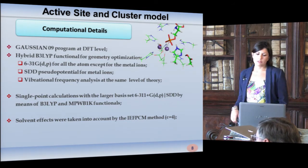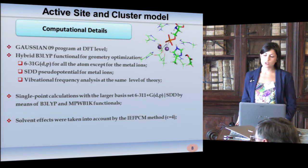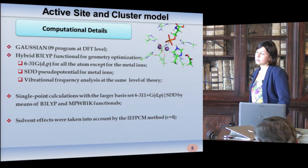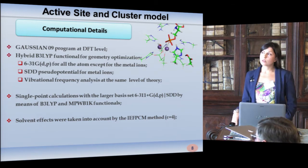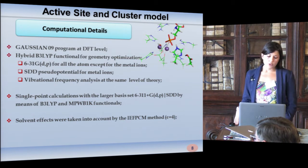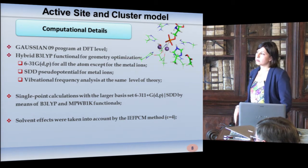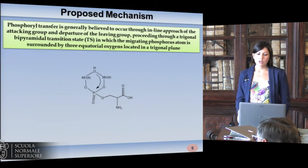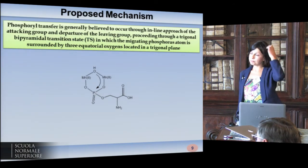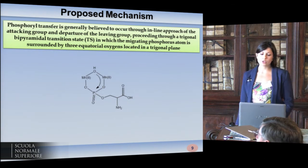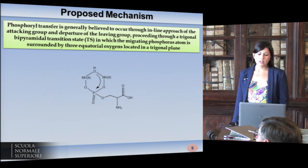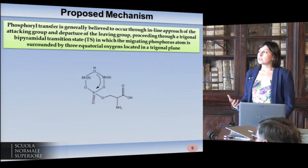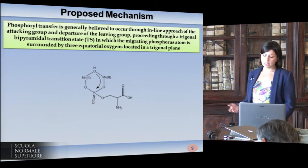These are the computational details we used: DFT level with the hybrid B3LYP functional, and also single-point calculations with a larger basis set, testing also another functional — the meta-hybrid MPWB1K — and, of course, we considered the solvent effect. The proposed mechanism in the literature is an inline approach of the nucleophile and the departure of the leaving group, but we have no indication on whether it proceeds by an SN2-like, SN1, or other mechanism.